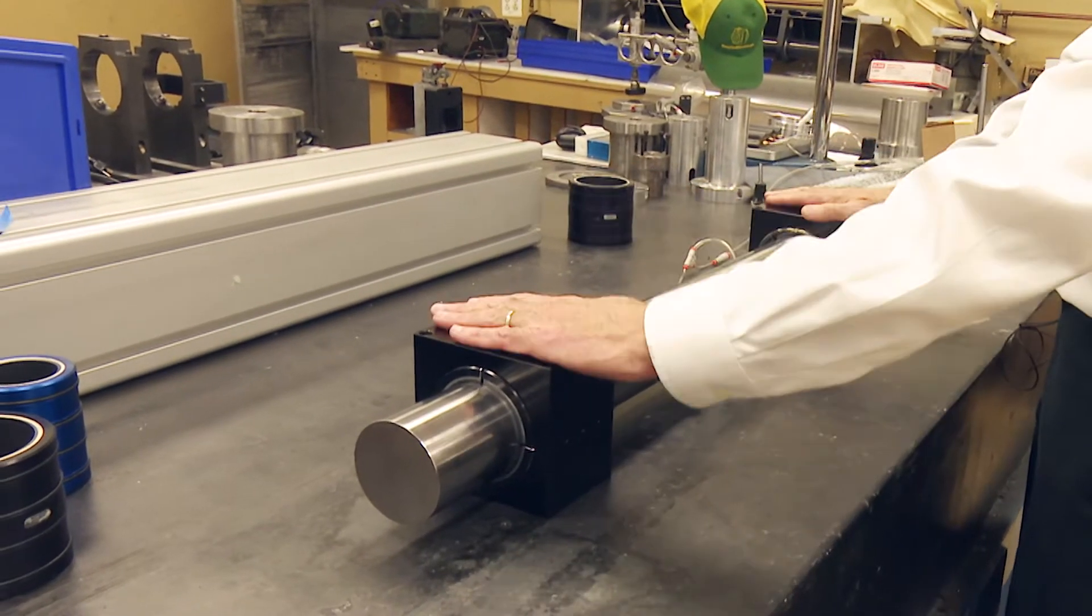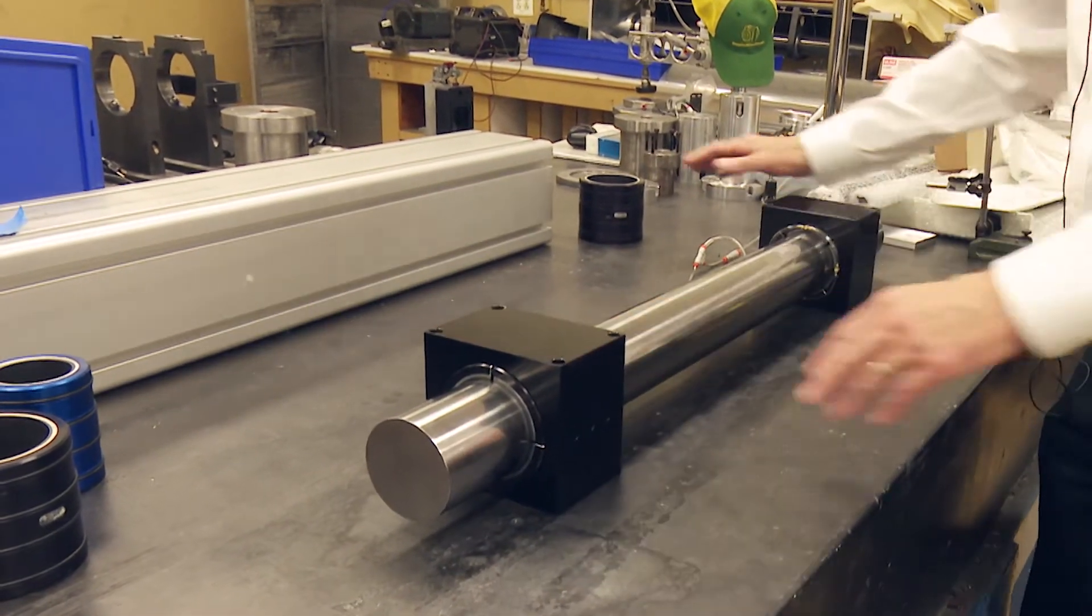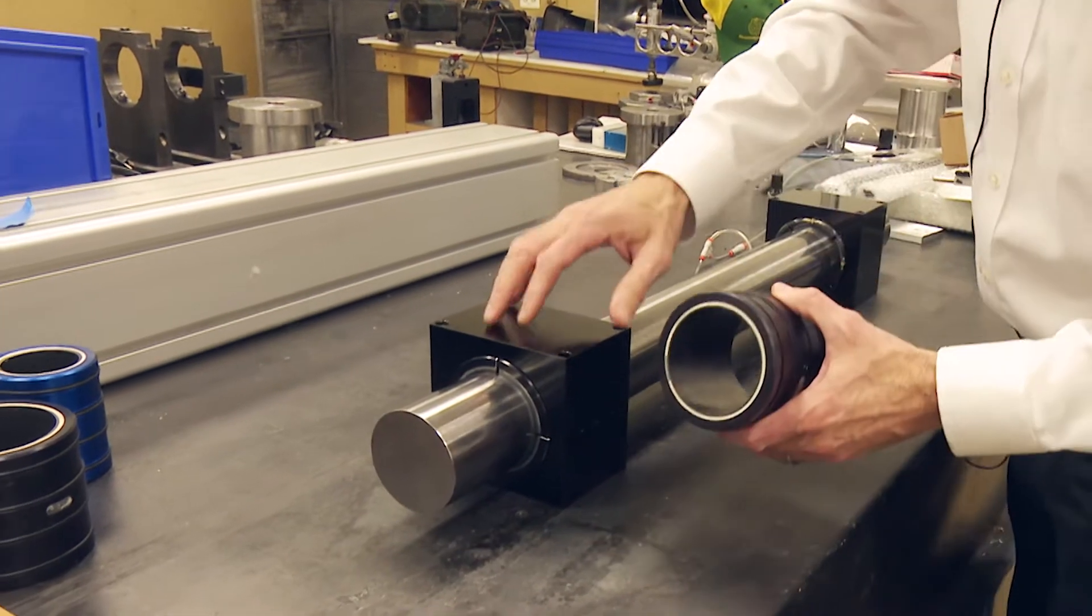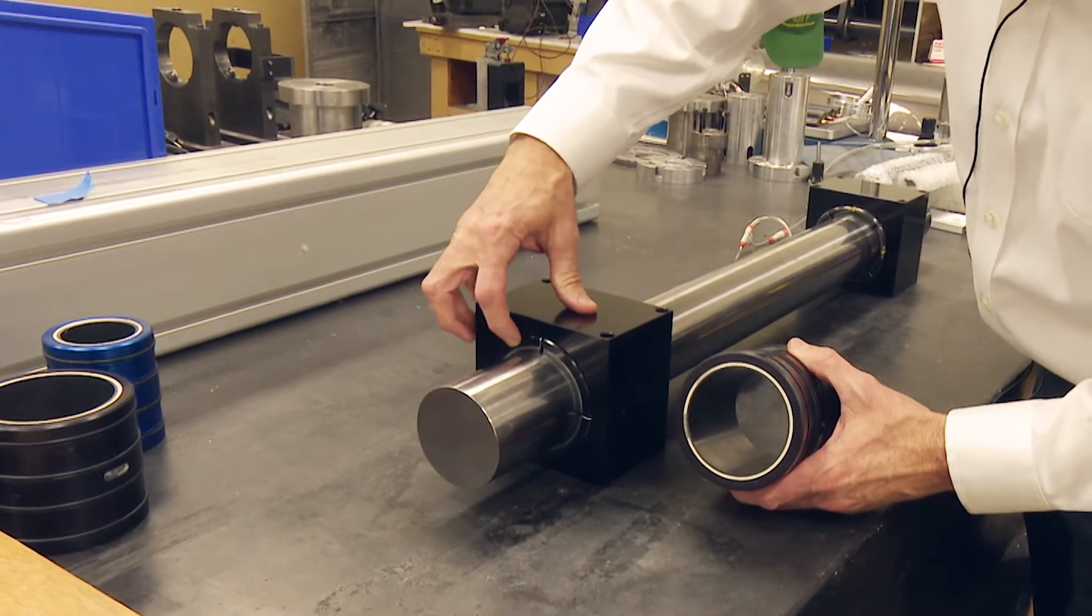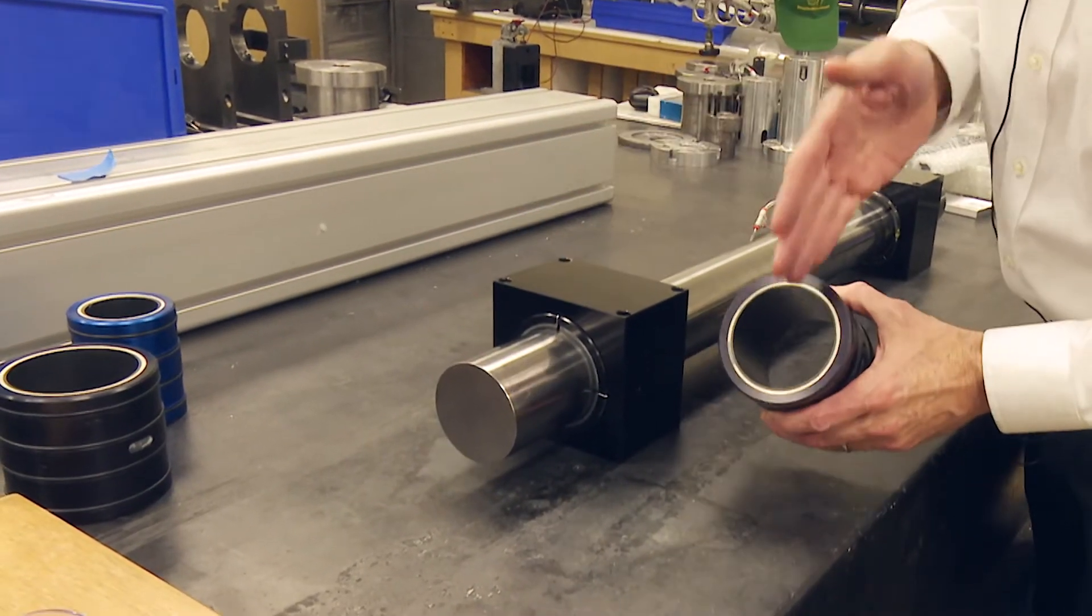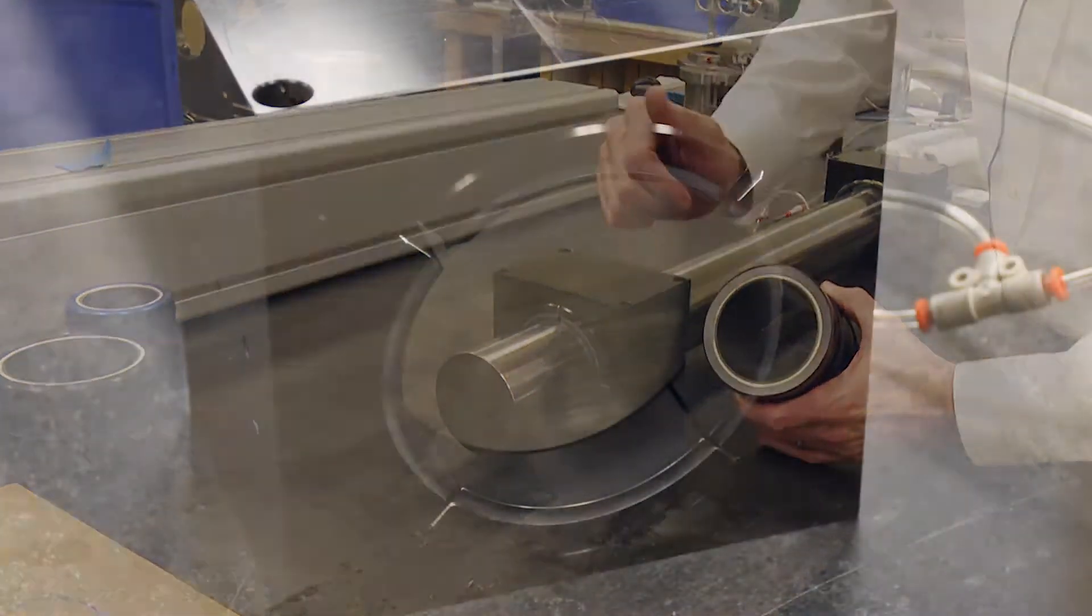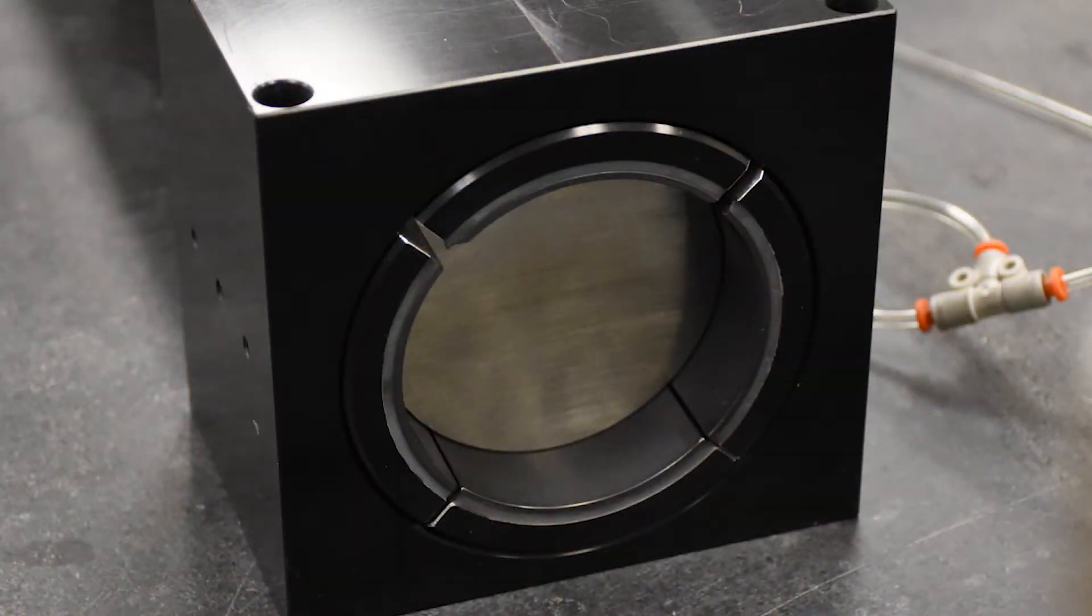We've got two of our standard pillow blocks, and inside of the pillow blocks we have a standard bearing that's been cut into four quadrants. So it's actually four separate pieces,